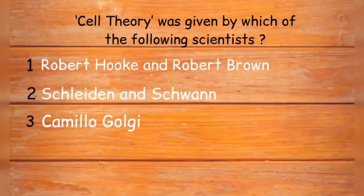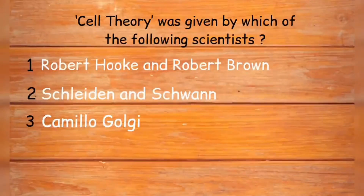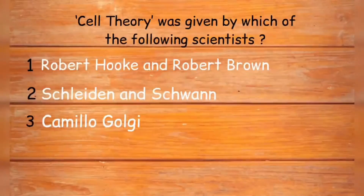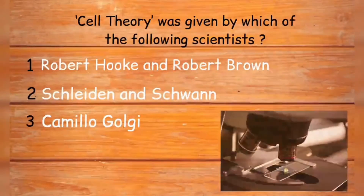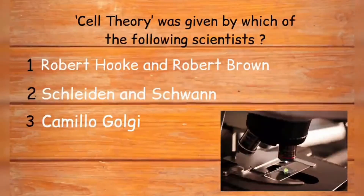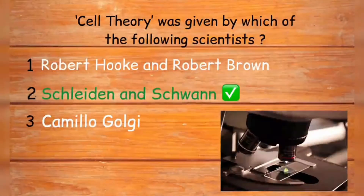Cell theory was given by which of the following scientists? Options are Robert Hooke, Robert Hooke and Robert Brown, Schleiden and Schwann, or Camilo Golgi. After the discovery of cell, some years later cell theory was presented by three scientists who gave detailed information about the cell. Two of those scientists who gave the cell theory were Schleiden and Schwann. Option two is the right answer.